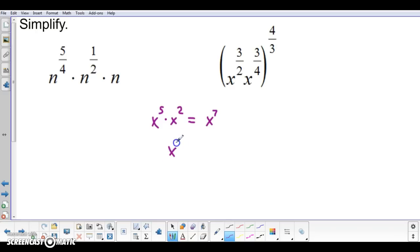Another rule we had is that if we had a power raised to another power, the power of a power property, we took those exponents and multiplied them together. Two times three happening to be six.